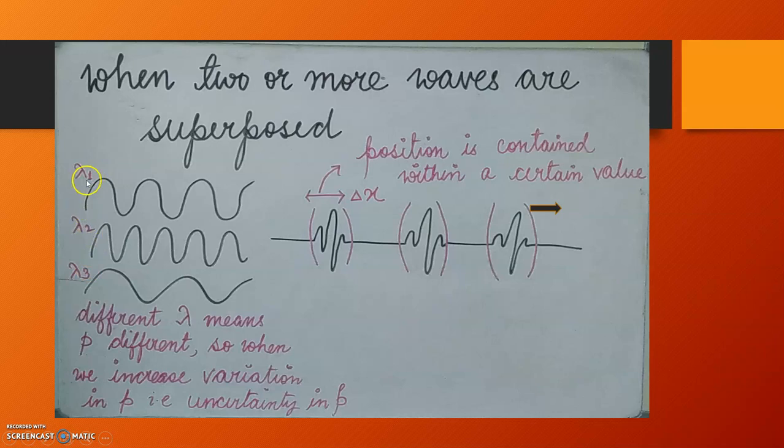Remember, when the wavelengths are different, their momentum is also different from each other. Now, what we are doing, we are adding these three waves or in physics language, we are superposing these three waves. As a result, what are we getting? We are getting a resultant wave which looks like this.